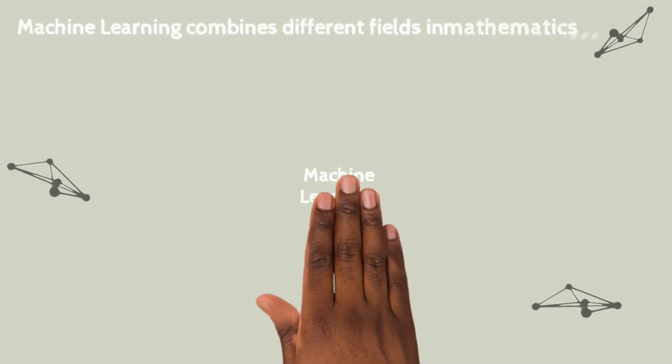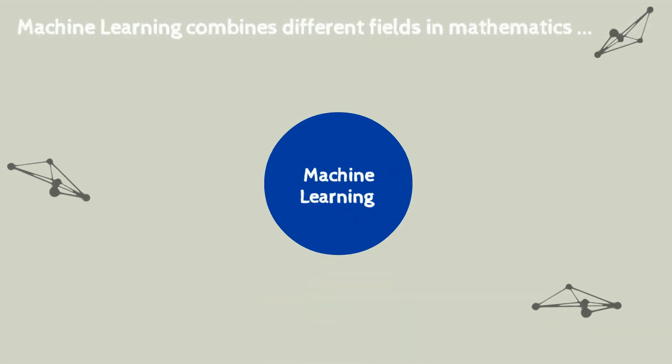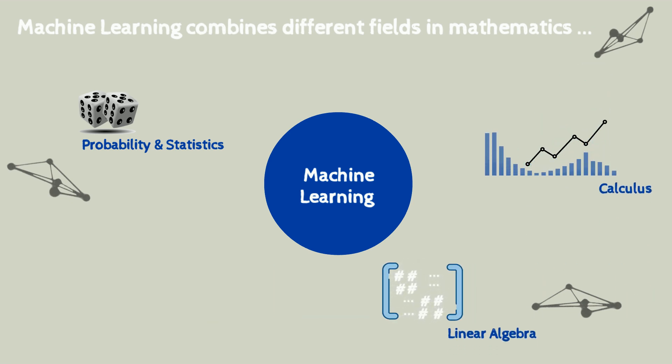Four fields of mathematics combined in machine learning. These include probability and statistics for error function design, calculus and linear algebra for model representation, and optimization for finding best models.